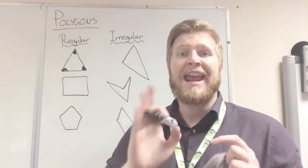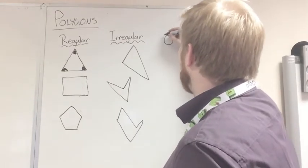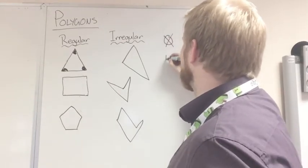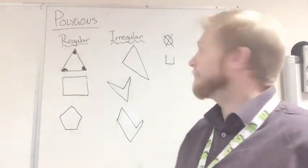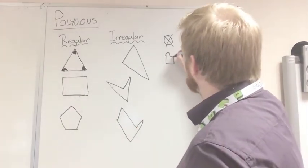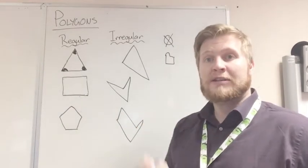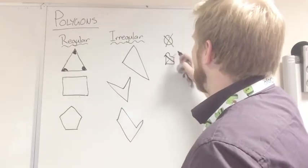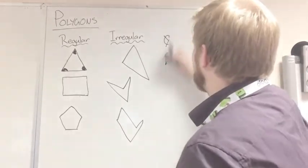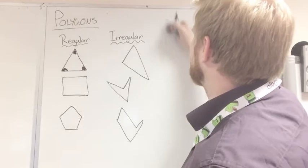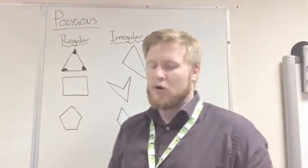A polygon is a 2D shape that doesn't have curved sides, so a circle isn't a polygon. 2D but has a curved side, that shape there has straight sides but a curve as well, so that is not a polygon. So any 2D shape with straight sides is classed as a polygon, all straight sides.